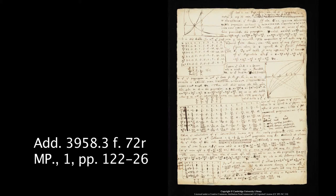Here we see Newton using — actually, discovering — the binomial theorem. He's interested in two curves on this page: one is the hyperbola and the other is the circle. He is interested in calculating the area of the surface bounded by the hyperbola and the area of the surface bounded by the circle.